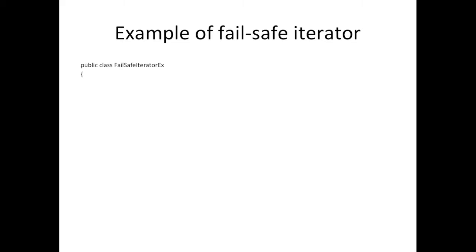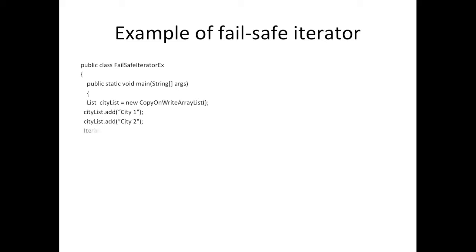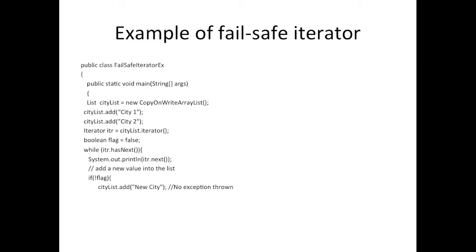Let's have a look at a fail-safe iterator example. We have a main method creating a CopyOnWriteArrayList, adding a couple of cities, and then iterating over it. We are printing the cities using the iterator's next method, and then adding a new city to the list. This will not throw an exception because we are making changes to the original collection, and while iterating it creates a snapshot of the original collection and iterates over it — so no exception is thrown.